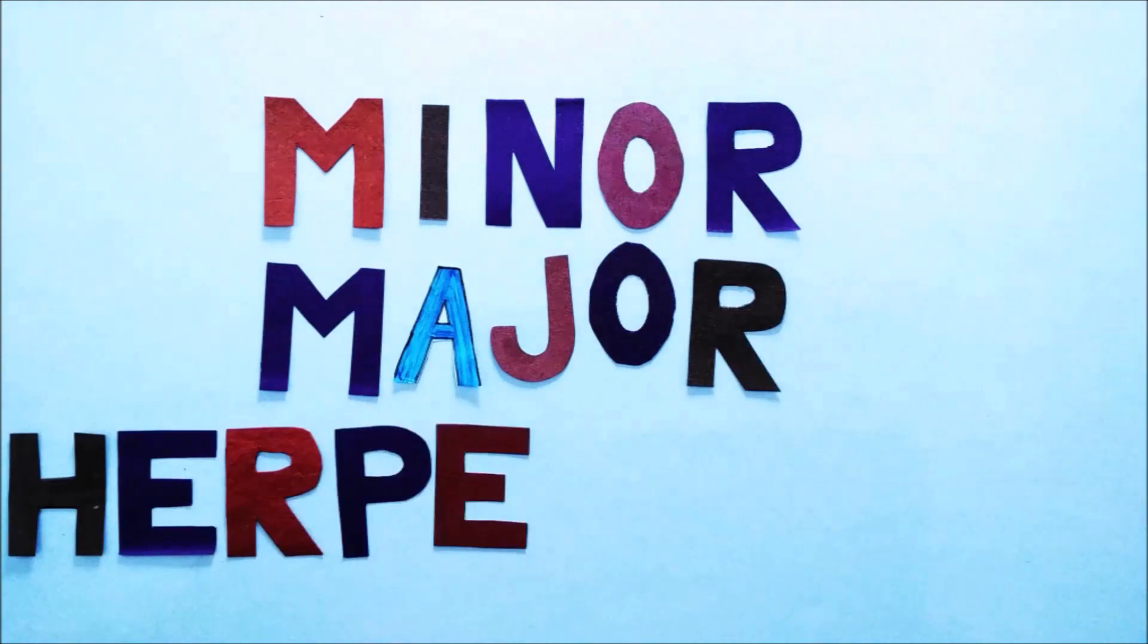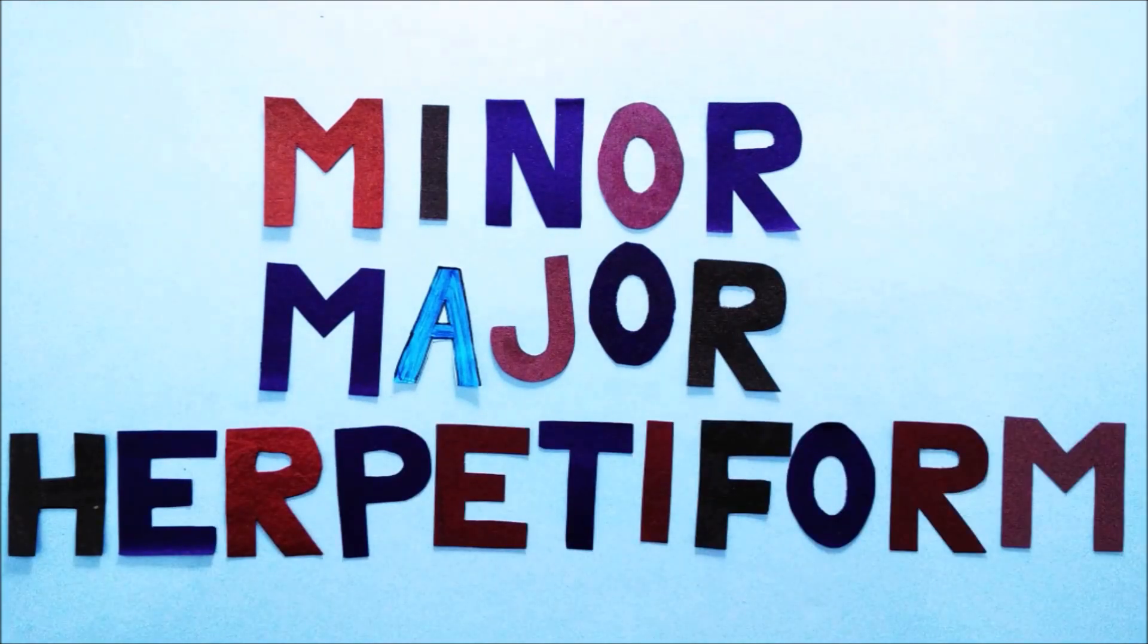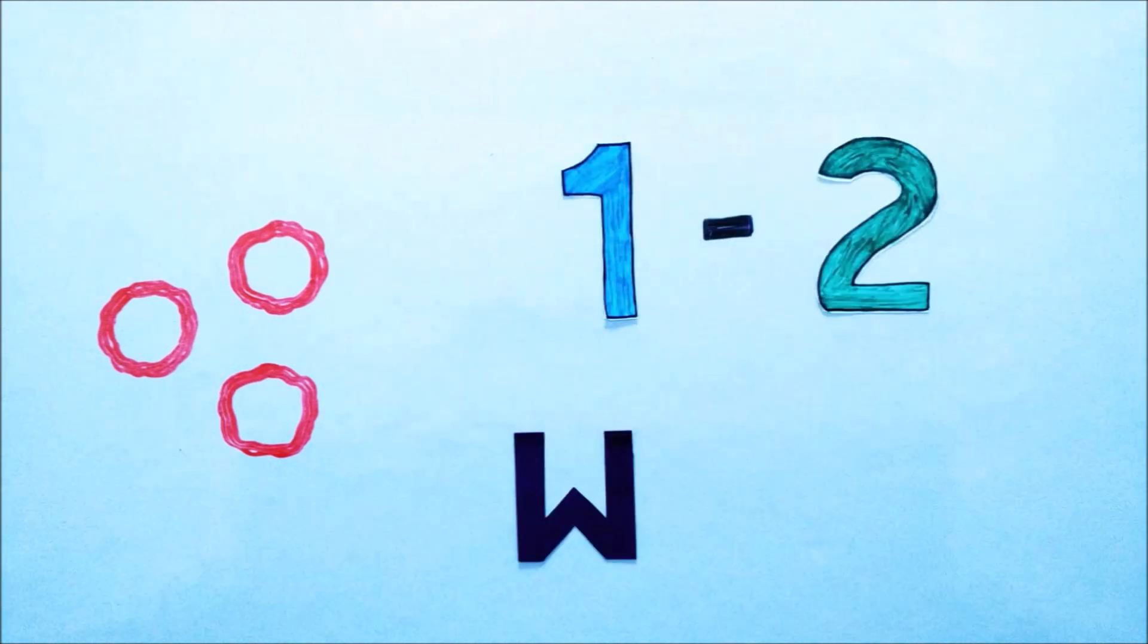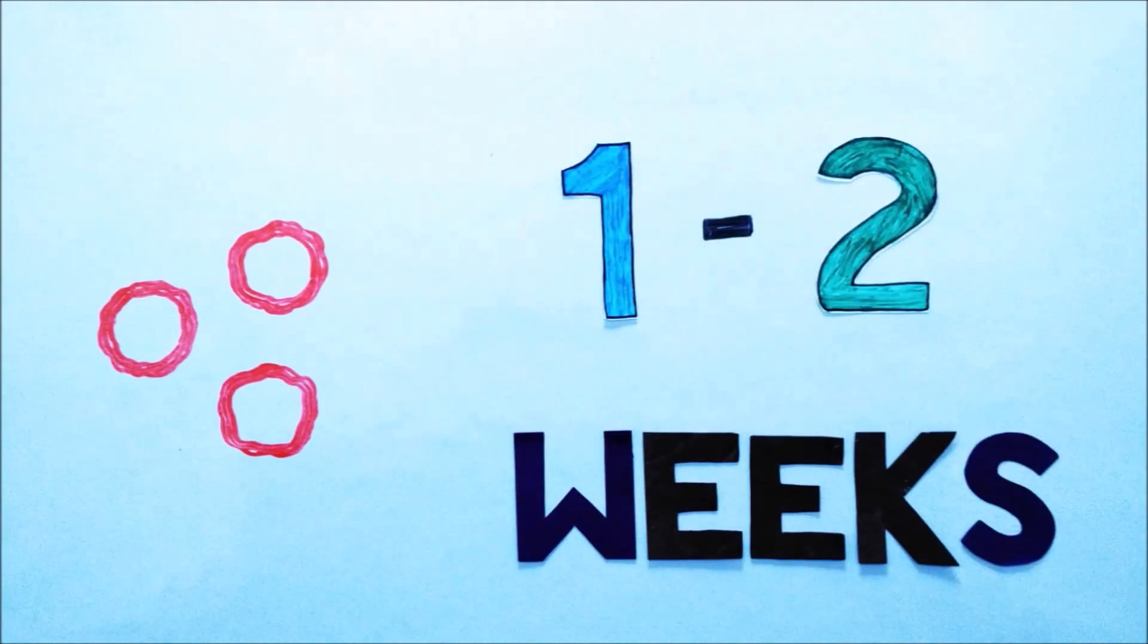There are three types of canker sores: minor, major, and herpetiform. Minor canker sores are small, oval shaped with red edges. They heal within 1-2 weeks.